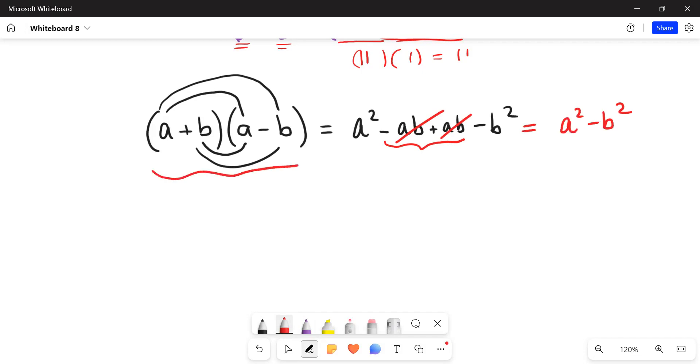So this part on the left is called a sum and difference formula. You're basically multiplying the sum, a plus b, times the difference. And you end up with this answer right here on the right. This is the difference of two squares that I named earlier. So what you want to do is recognize when you have one of these and factor it back to there.